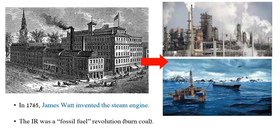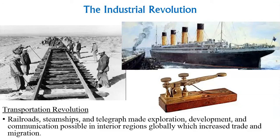Then came the invention of the steam engine — if you're thinking about climate change, the Industrial Revolution is when it all really fast-forwarded, though people were not aware that burning fossil fuels would cause environmental issues for years to come. Railroads, steamships, and the telegraph made exploration, development, and communication possible in interior regions globally, increasing trade and migration. Railroads spread throughout the United States and Europe, steamships made ocean travel much easier, and the telegraph made communicating across large swaths of land so much easier than getting on a horse.